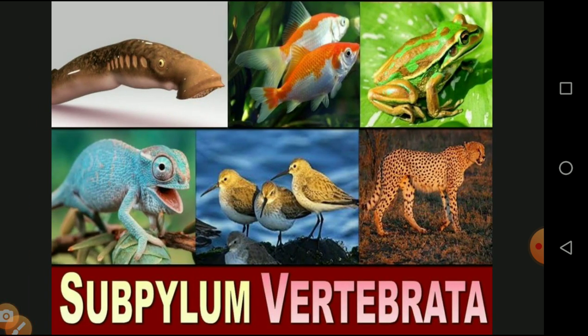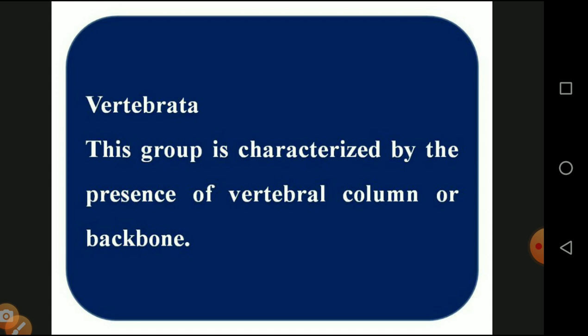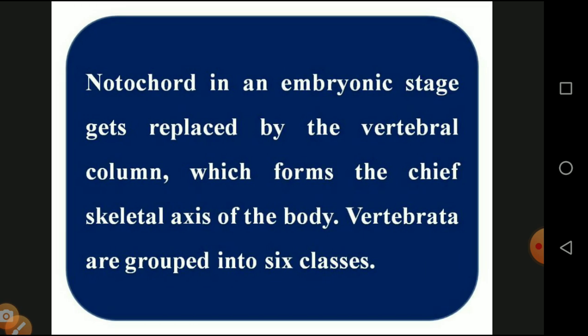Sub-phylum Vertebrata: we know all these organisms, starting from a small frog up to dinosaurs, lions, tigers, elephants, and human beings — they come under the category of Vertebrata. Vertebrata is characterized by the presence of a vertebral column or backbone. The notochord in the embryonic stage gets replaced by the vertebral column. After fertilization of sperm and egg, the diploid zygote is formed.